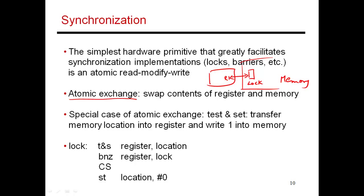An atomic exchange swaps the contents of a register entry and a memory location. I'm going to show you how that can be used to construct a lock by taking a special case of an atomic exchange called a test-and-set. This is a special case where the value in the register happens to be a 1 at the start. So what you're doing is putting a 1 into that memory location and then reading what is in the memory location into the register, and then checking the value of that register — which is why it's called a test-and-set.